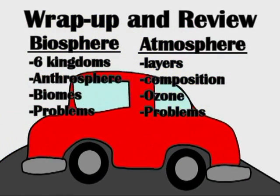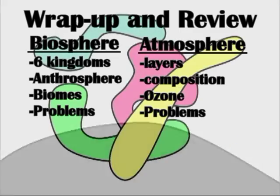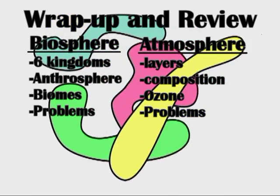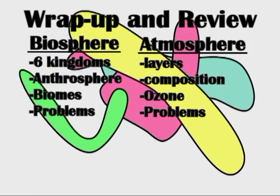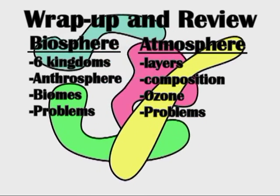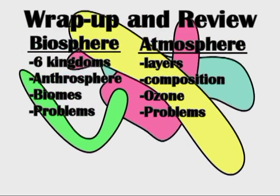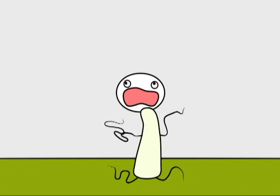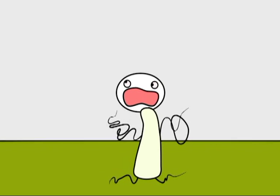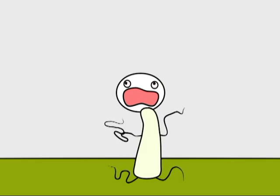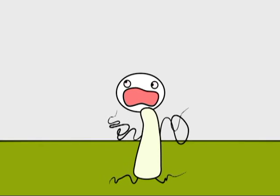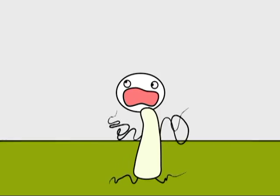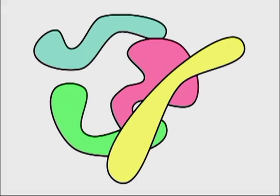What have we learned about today? In the biosphere, we learned about the six kingdoms and specific details about each, the anthrosphere, biomes, and problems within the biosphere. In the atmosphere, we learned about the different layers, the chemical composition, the ozone layer, and problems within the atmosphere. It's been a fun series to make — if you have any questions or comments, feel free to leave a comment below and I will get to you directly. Thank you for watching, and be sure to check out the rest of the series. I hope you all have a nice night. Goodbye!